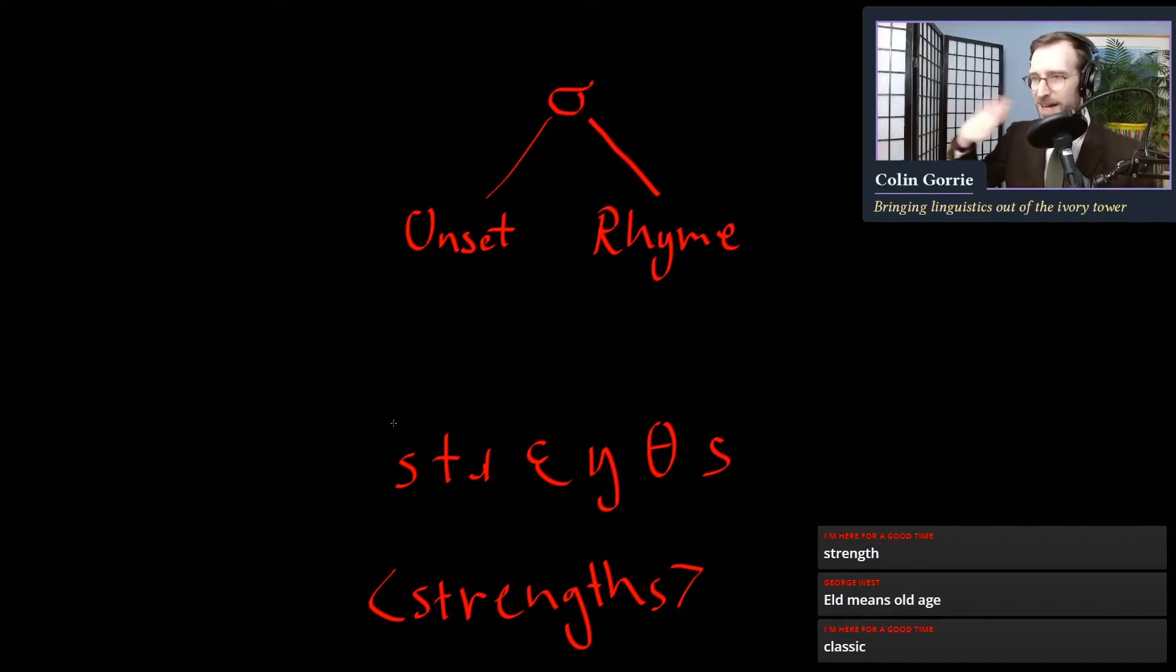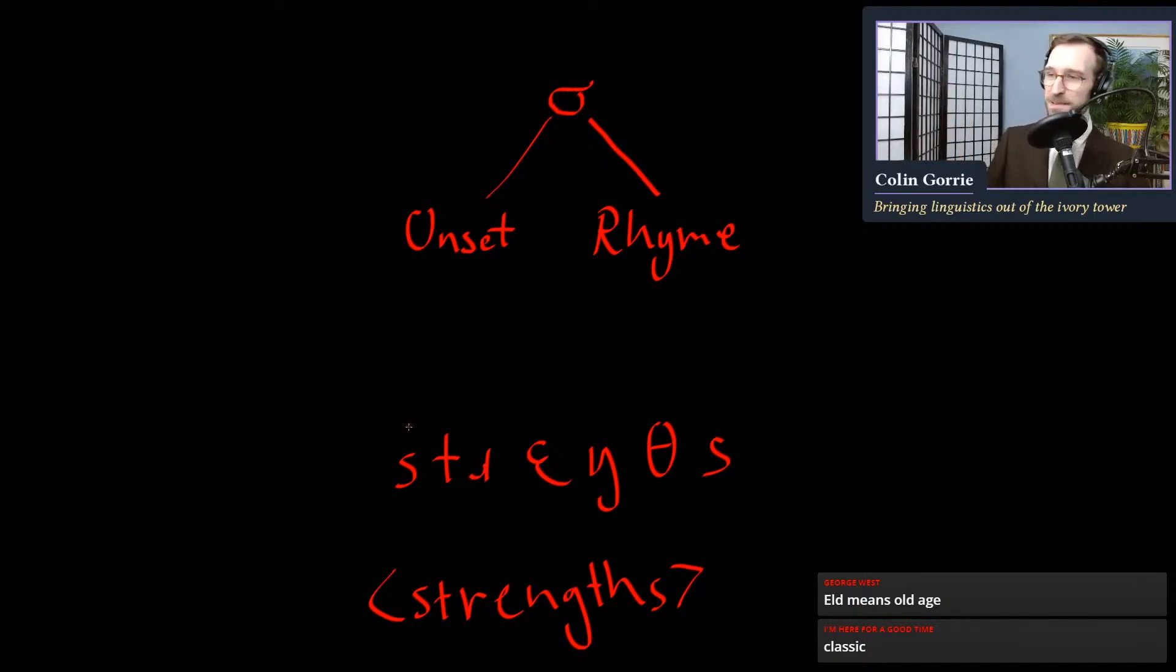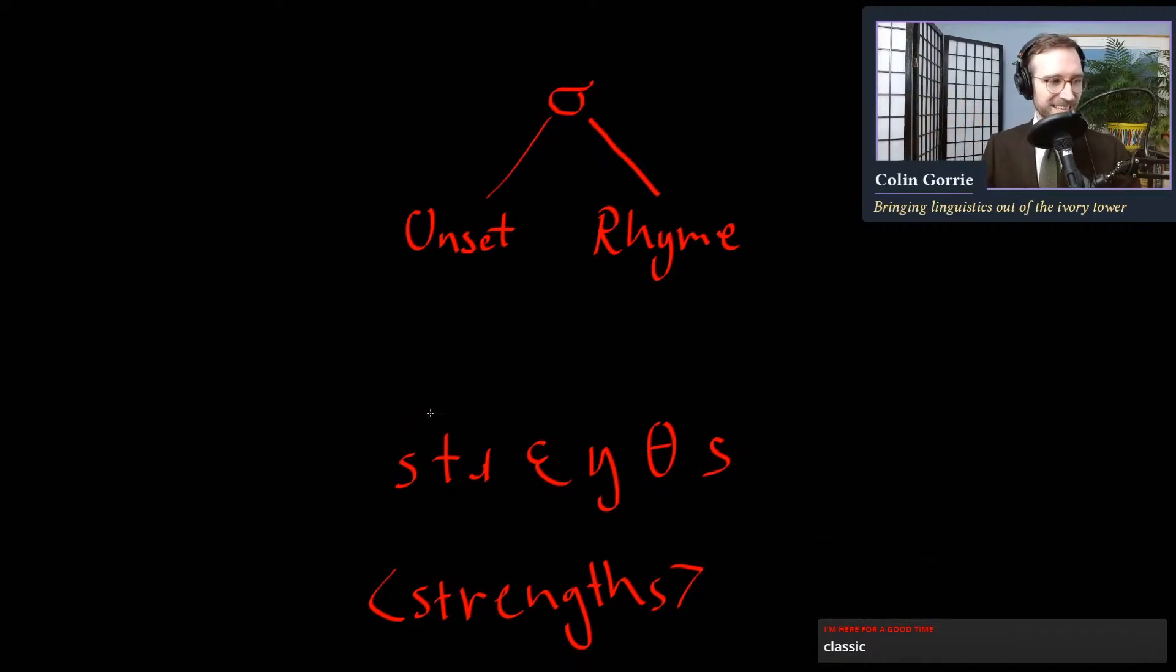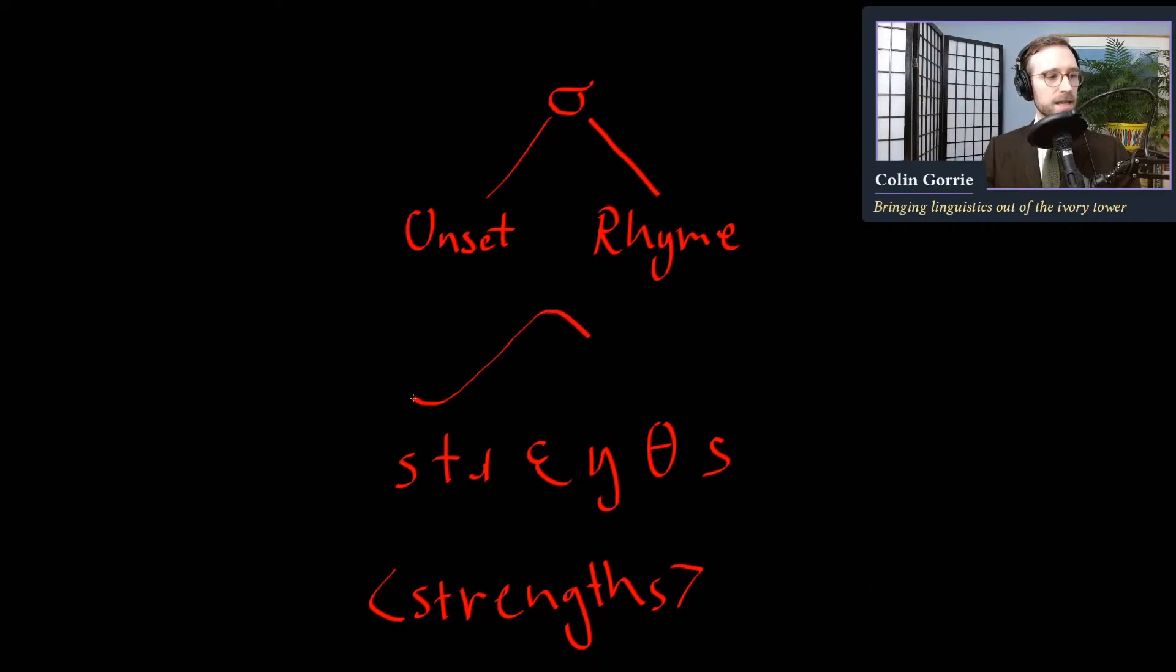And okay, where's our peak of sonority? So S is one of these exceptions to the principle of the sonority sequencing principle. S is actually a little bit higher than T, but nevermind. So we have something like this. And this is our syllable peak, the vowel E. So getting rid of our little diagram there. So E is going to fit into the rhyme, and everything after it is also going to fit into the rhyme. So this engths is going to be the rhyme and the onset, which is optional, is going to take everything that precedes the peak in sonority. So stra.